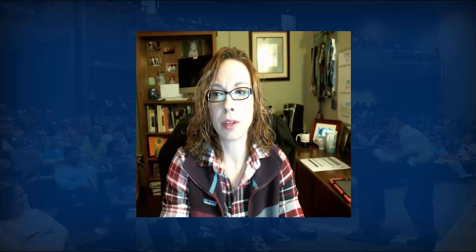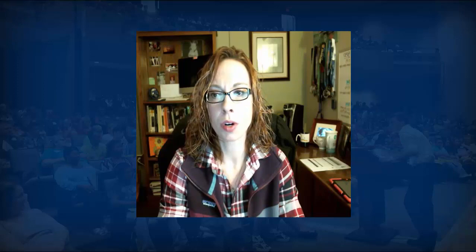Some benefits of the electronic health record include catching and flagging potential problems — like the medication error example — as well as alerting you to overdue preventive health services such as mammograms. It can also track data over time, which is a huge benefit for finding trends, and you can monitor patient progress around different targets. For instance, if a patient needs to lose a hundred pounds, we can monitor their progress and identify what's causing fluctuations in their weight.